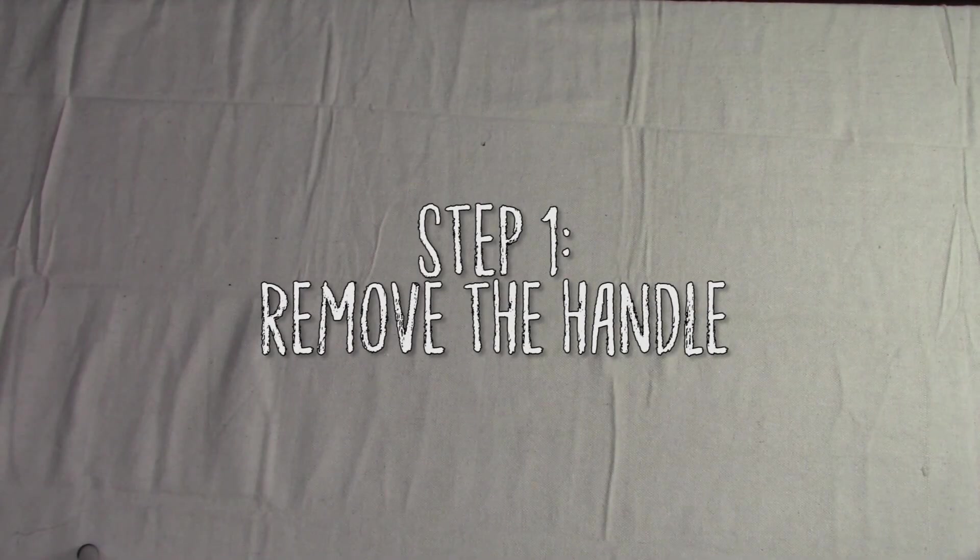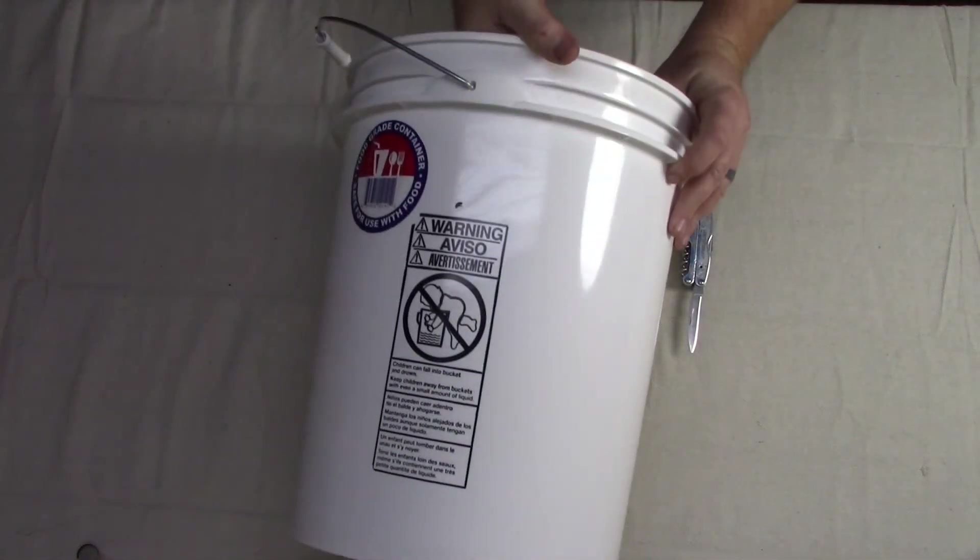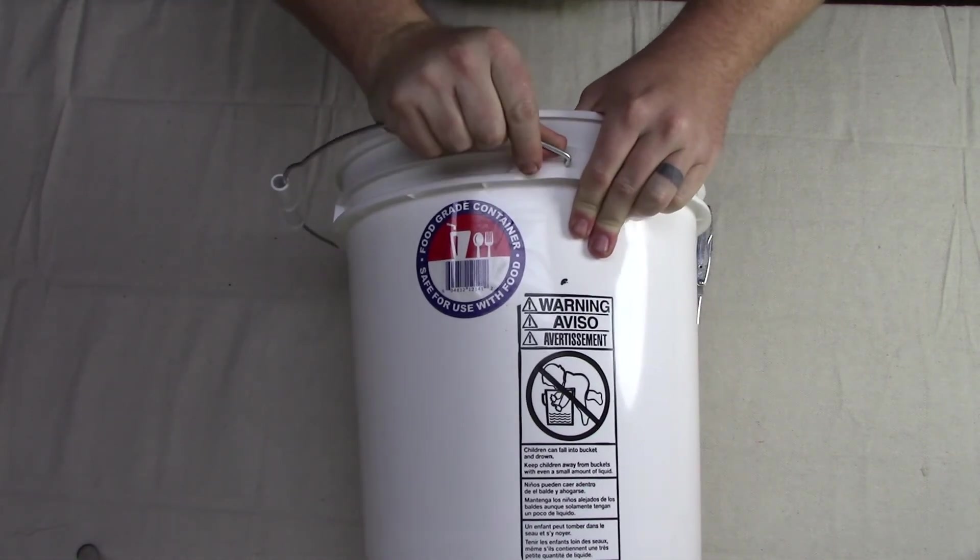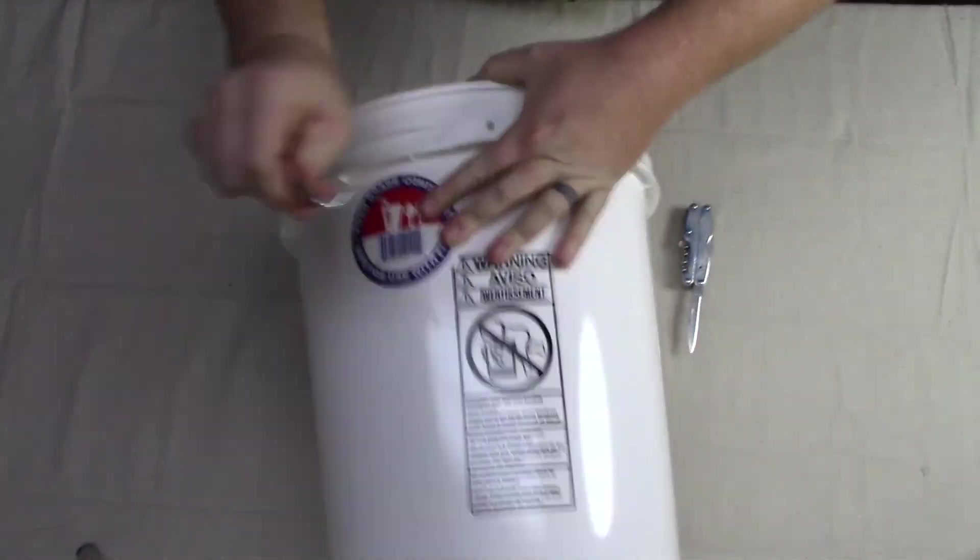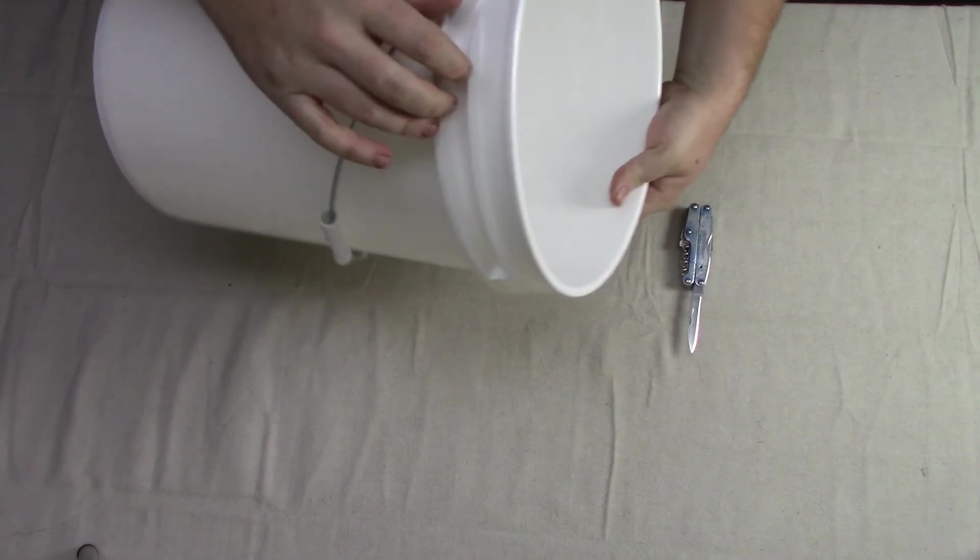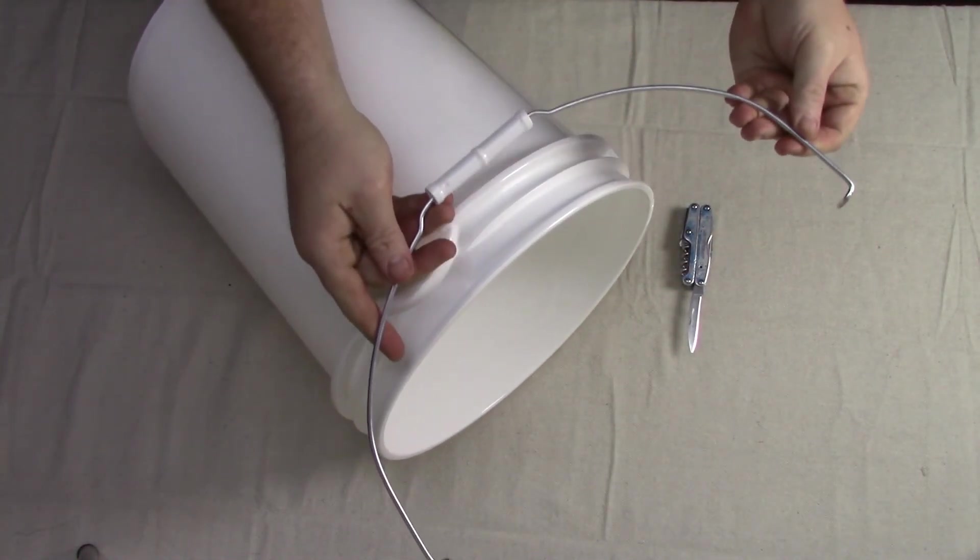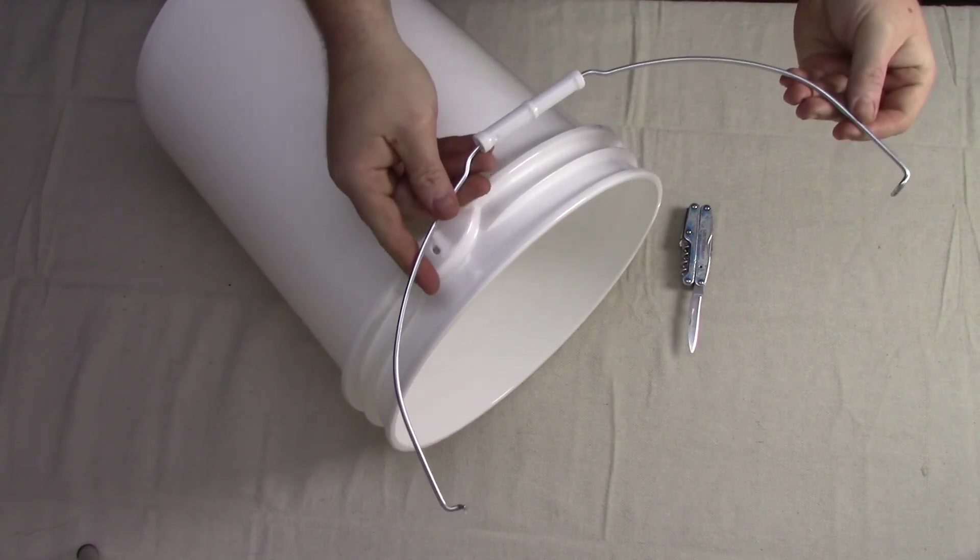Step one, removing the handle. Personally, I do not want the handle flopping around when I'm positioning the light, so I'm going to simply remove it now. The first side will be the hardest, but with a little work it should pop out. After that, it's a simple matter of removing the other side. Set the handle aside, as it will likely come in handy on another project.